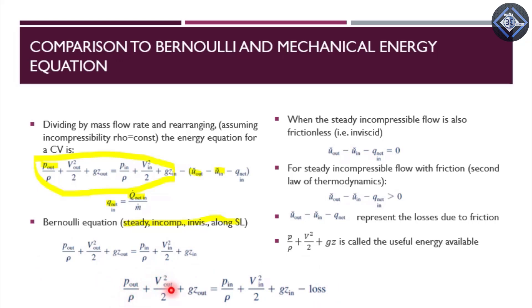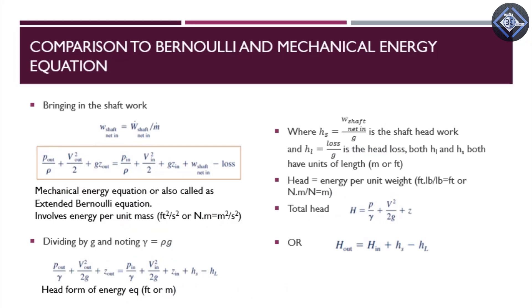We write the energy equation as: p-out/ρ + V-out²/2 + gz-out = p-in/ρ + V-in²/2 + gz-in minus the losses. We represent losses accordingly. We then bring in the shaft work per unit mass flow rate and add it to the equation. This equation inside the box is called the mechanical energy equation, or the extended Bernoulli equation. It involves energy per unit mass and has units of ft²/s² or N·m/kg = m²/s².